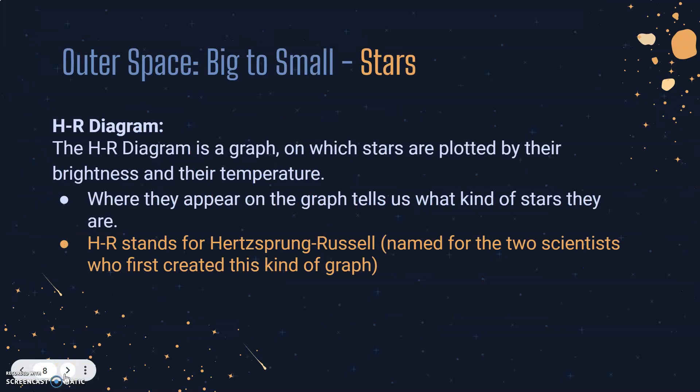Now, once we've gathered all this information about stars, like any good scientist, we graph it. Stars are plotted on a graph called the HR diagram, based on their brightness and their temperature. Based on their position on the graph, that tells us what type of star they are. We're going to cover the star types on Monday, so more to come on that. For now, we want to take a closer look at the HR diagram.